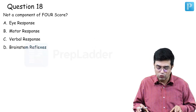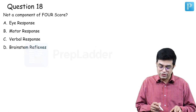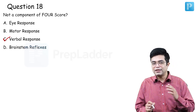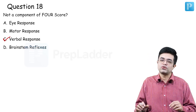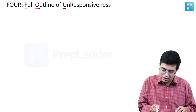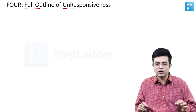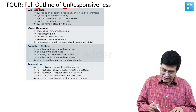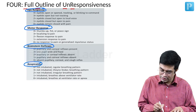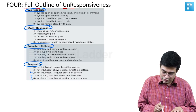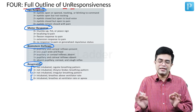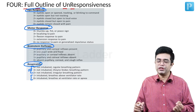Question number eighteen: not a component of the FOUR score. The FOUR score — Full Outline of Unresponsiveness — does not include verbal response, so the answer is C. The four parameters are: eye response, motor response, brainstem reflexes, and respiration pattern. For respiration, scores of 0 and 1 are for intubated patients; scores of 2, 3, and 4 are for non-intubated patients. The FOUR score is useful in assessing patients who cannot verbalize.